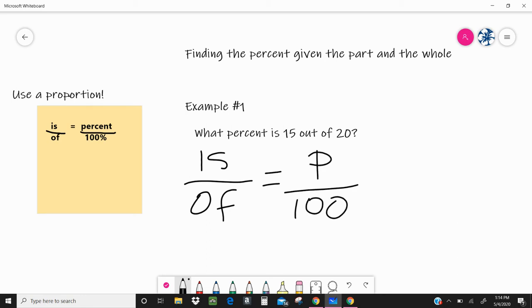Now we're going to decode. We need to know what percent is 15 out of 20. I'm looking for my is word and my of word and my percent. Is is 15, so I'm going to erase my is and put in my 15. We have of 20, so I'm going to erase my of and put the 20 in there. And I don't know my percent. So that is what is blank, our unknown, our P for percent.